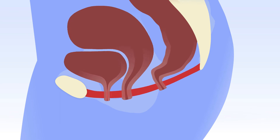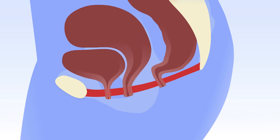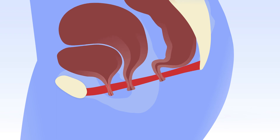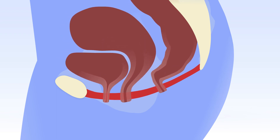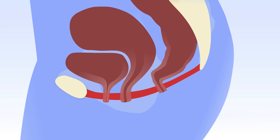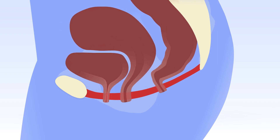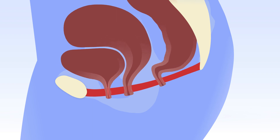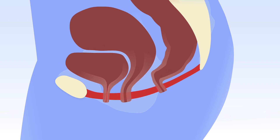A voluntary contraction of the pelvic floor means that, on demand, the pelvic floor muscle can be activated, resulting in an elevation of the perineum and a cranial ventral displacement of the pelvic organs. A pelvic floor muscle contraction can be absent, weak, normal, or strong. A contraction of the pelvic floor muscle is important in the closing mechanism of the urethra, vagina, and anal canal, and is essential to maintain continence.